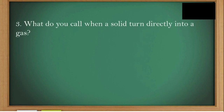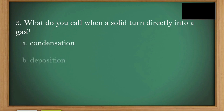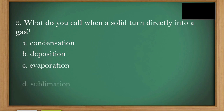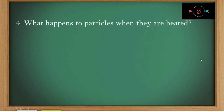Number three: What do you call it when a solid turns directly into a gas? A, condensation. B, deposition. C, evaporation. D, sublimation. The correct answer is letter D.